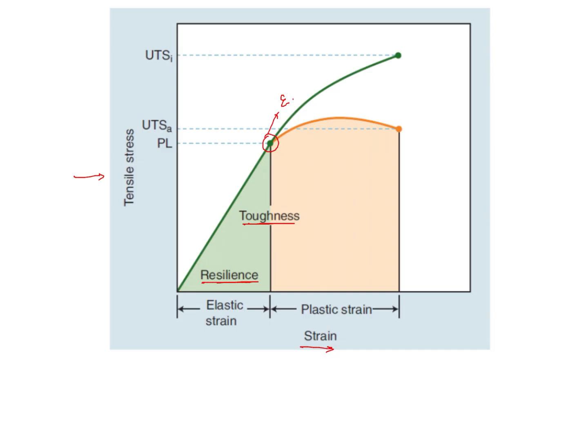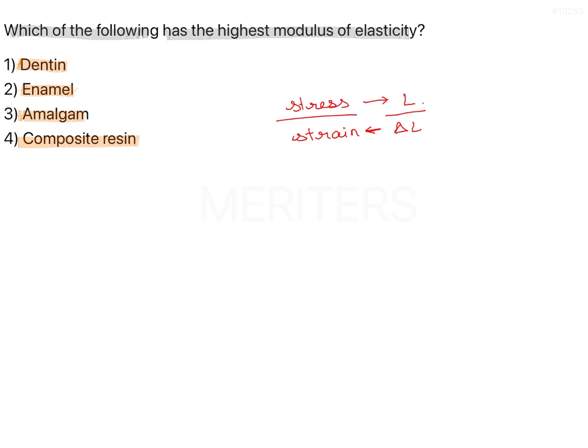So the modulus of elasticity of different restorative materials and the dental materials are different. Enamel has the highest modulus of elasticity followed by amalgam, then dentine and then composite resin. Composite is in the range of 25 to 35.